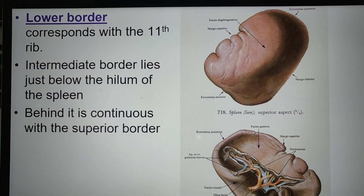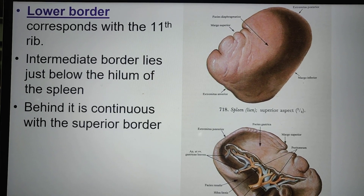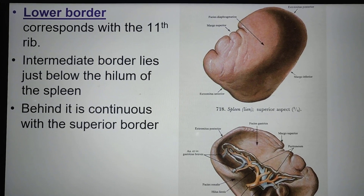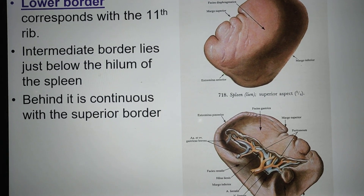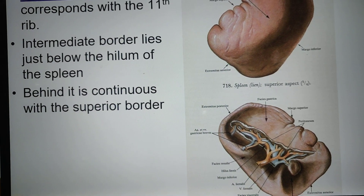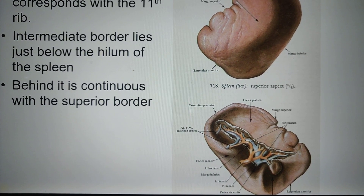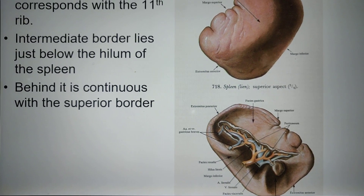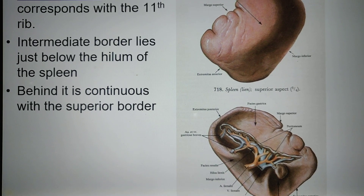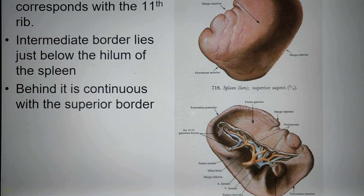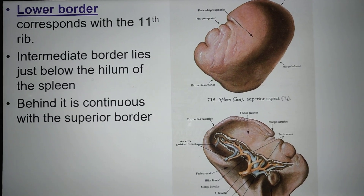The lower border corresponds with the 11th rib. The intermediate border lies just below the hilum of the spleen. The hilum is the structure through which vessels and other structures enter or exit the organ. Behind, the intermediate border is continuous with the superior border.